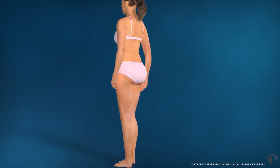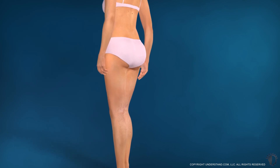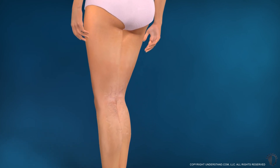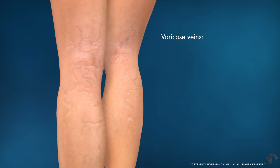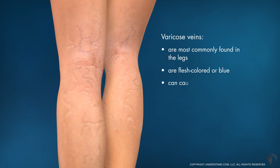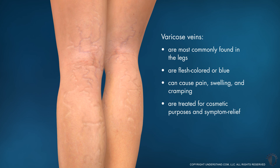Varicose veins are enlarged, twisted superficial veins located just beneath the skin surface. Varicose veins can occur in any part of the body, but are most commonly found in the legs. These veins are flesh-colored or blue and can cause pain, swelling, and cramping. They are treated for both cosmetic purposes and for symptom relief. Varicose veins can be a symptom of an underlying medical condition and should be discussed with your primary doctor before initiating any treatment.